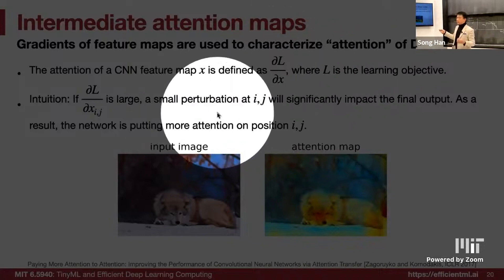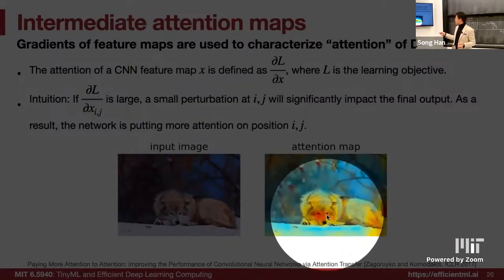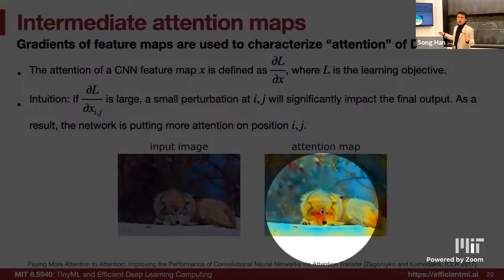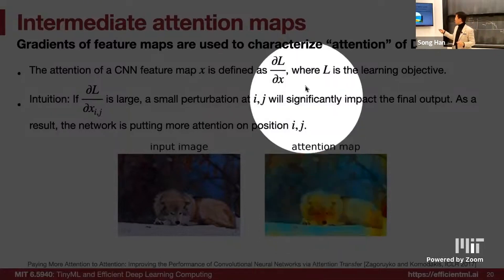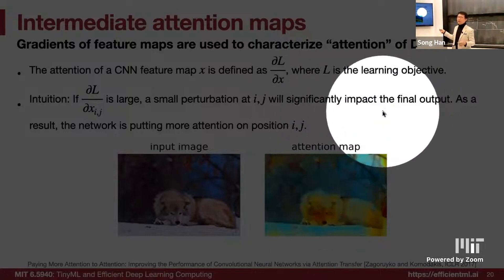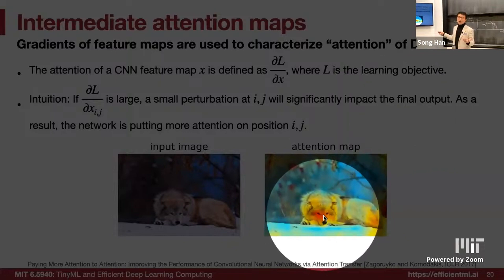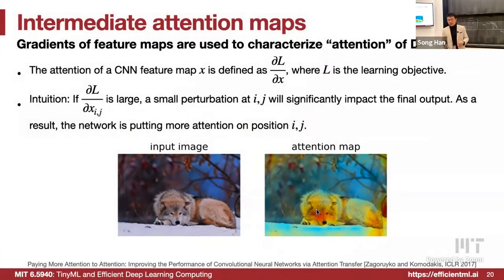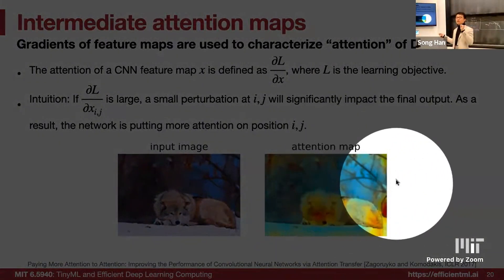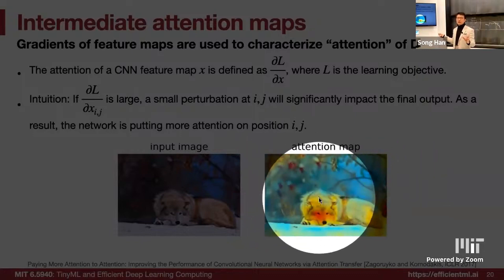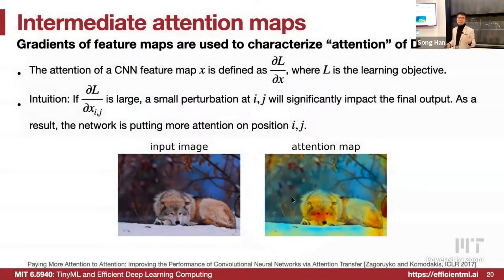This is the intermediate attention map. We back-propagate the gradient all the way to the input image. The attention of a feature map is defined as the partial derivative of loss over partial x. If the gradient is large — like in the nose, eyes, and face — it means a small perturbation in this area will significantly impact the final output, meaning this area is very important for the decision. At position ij, the attention is defined as the gradient with respect to that pixel, and we try to match this attention map from the teacher versus from the student. Their dimensions are the same as the image and both teacher and student share the same image.